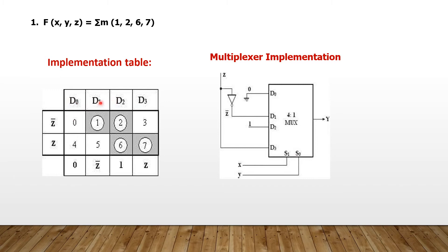In the implementation table, we have inputs d0, d1, d2, d3, and the last variable is Z. So the first row is Z bar and the second row is Z. The minterms run from 0 to 7, giving 8 minterms total. The given function has minterms 1, 2, 6, 7 circled. In the first column both minterms are not circled, so d0 = 0. In the second column the top minterm is circled, so d1 = Z bar. In the third column both minterms are circled, so d2 = 1. In the last column the bottom minterm is circled, so d3 = Z.